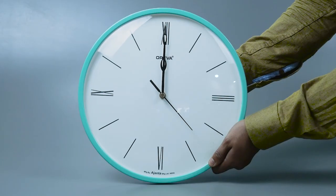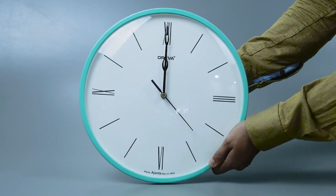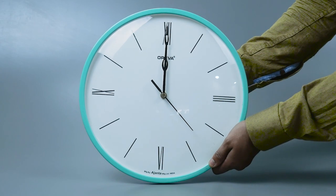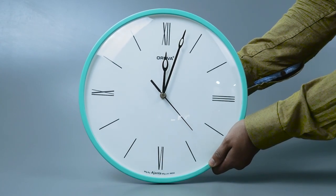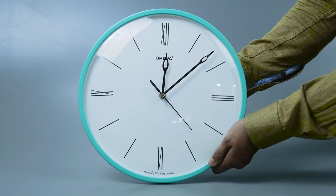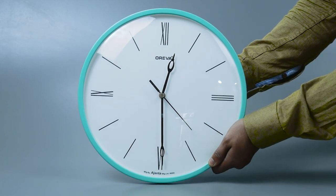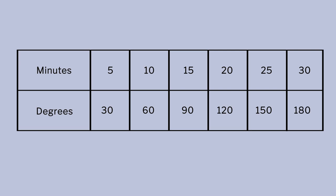My class was eager to explore the activities on the two variations, so I started with the activity on direct variation. For this activity, we need a clock whose hour and minute hand should be moving. Put the hour and minute hand at 12 o'clock, then move the minute hand to make it 12:05, 12:10, 12:15, 12:20, 12:30. I told my students to draw an observation table and note down the angles formed by the two hands.